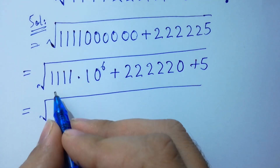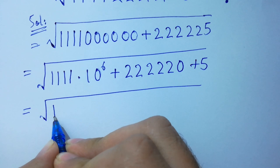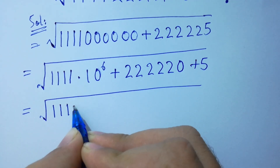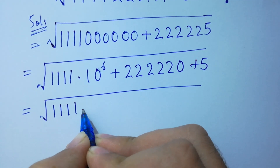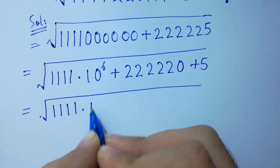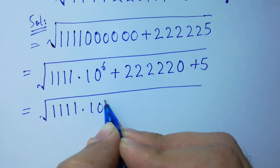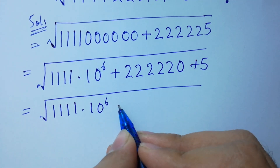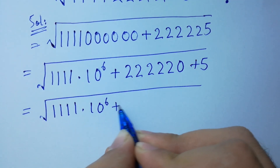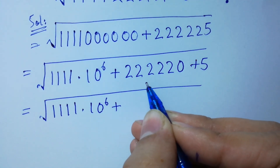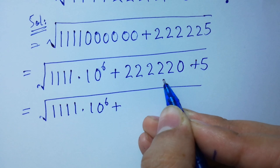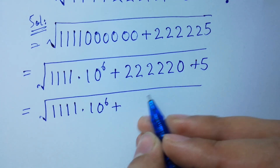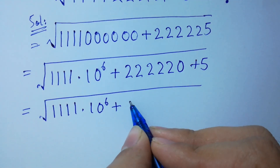5 times 2 to the power 4, times 10 to the power 6, plus 5 times 2.